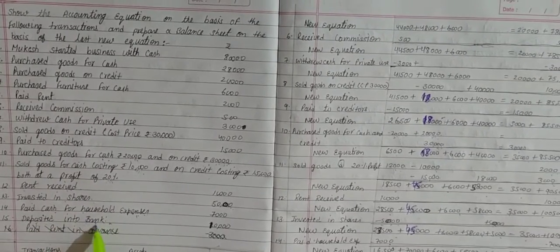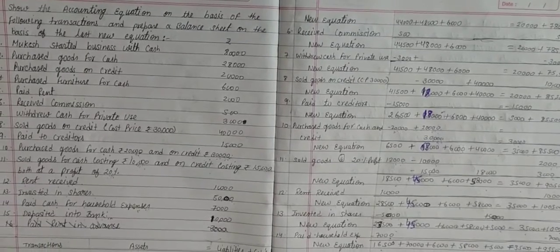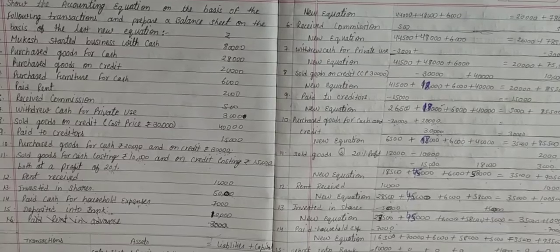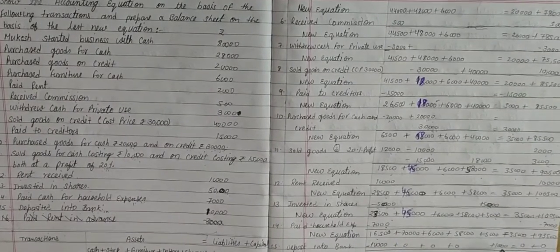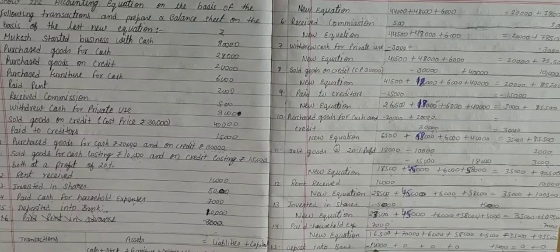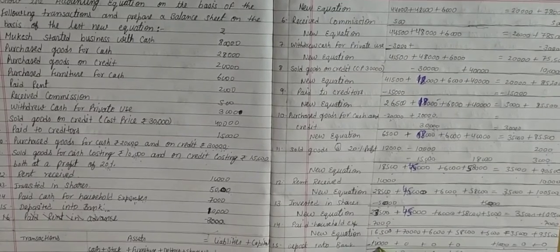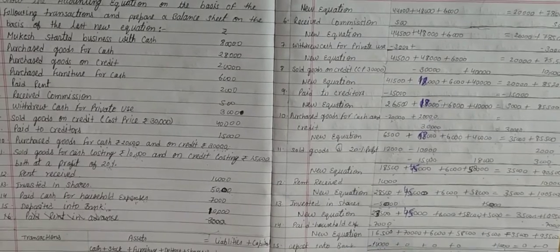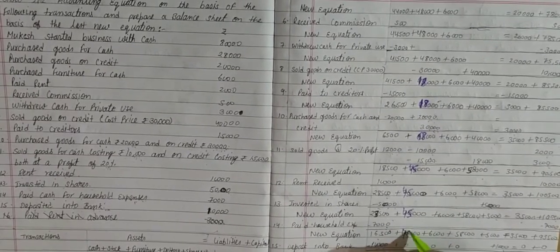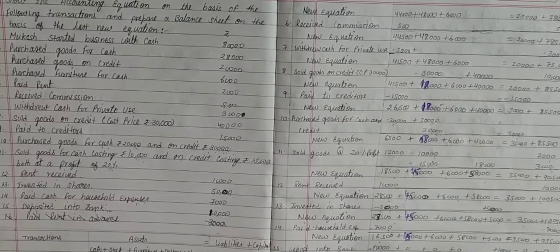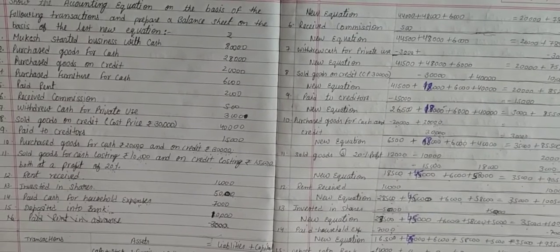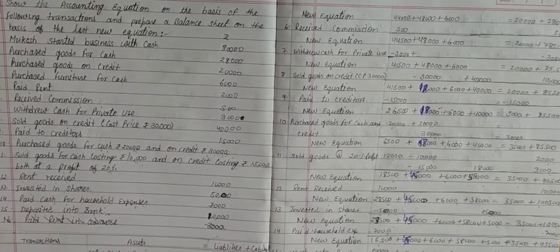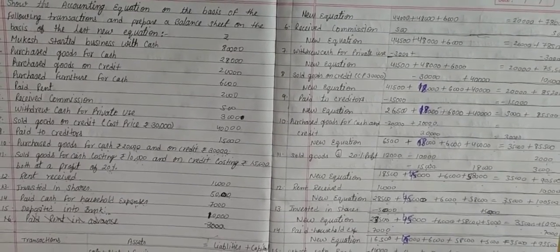Bank increases by Rs. 10,000 and cash reduces by Rs. 10,000. Final new equation: cash 6,500, stock 45,000, furniture 6,000, debtors 58,000, shares 5,000, bank 10,000, creditors 35,000, capital 93,500.